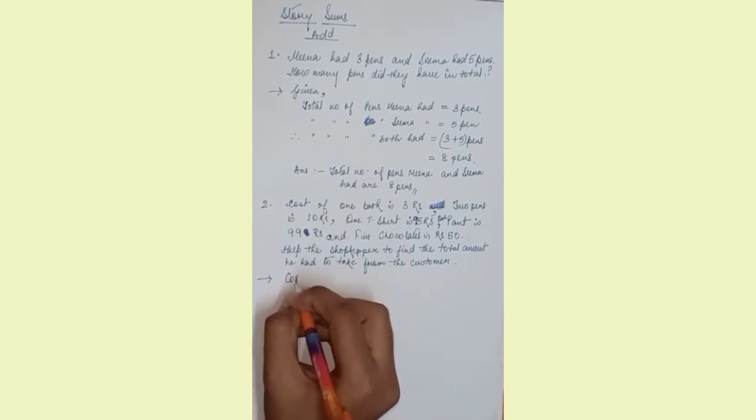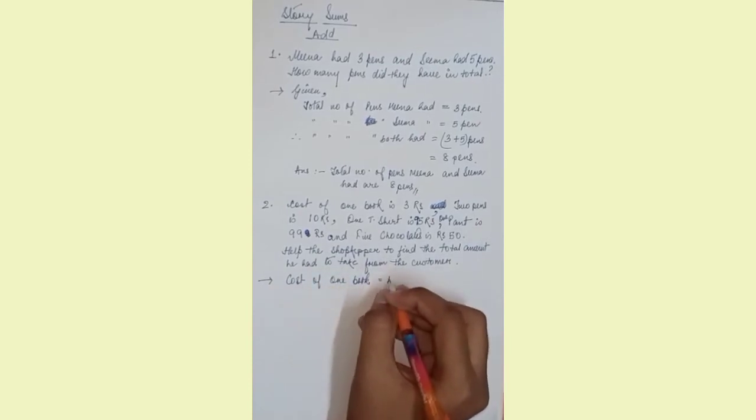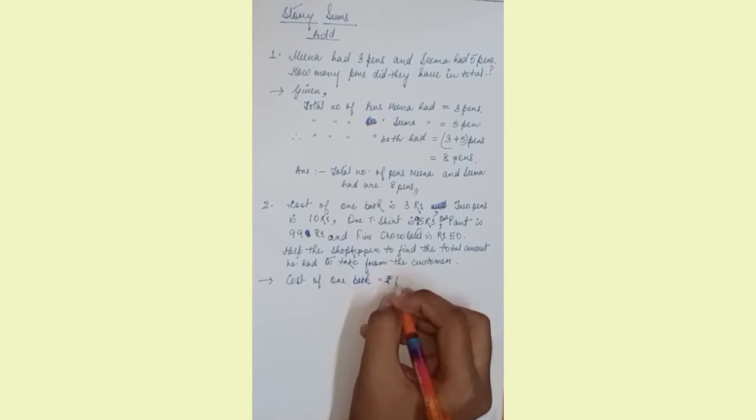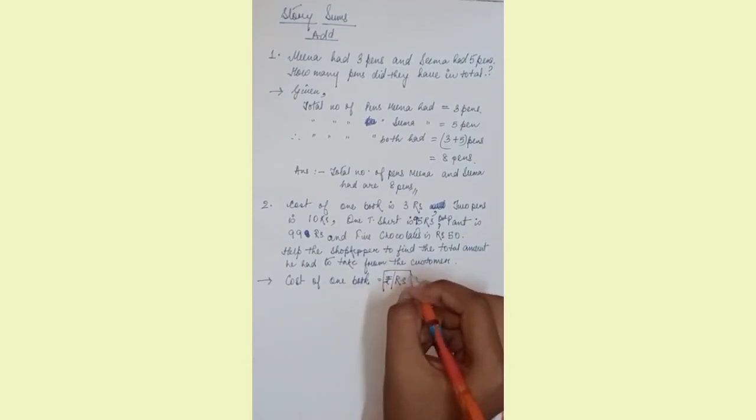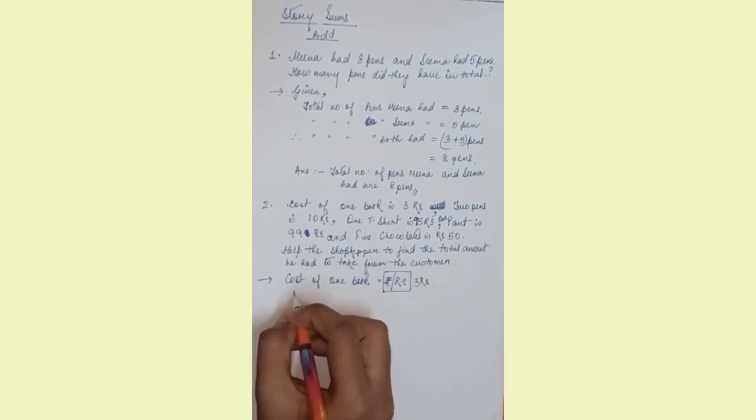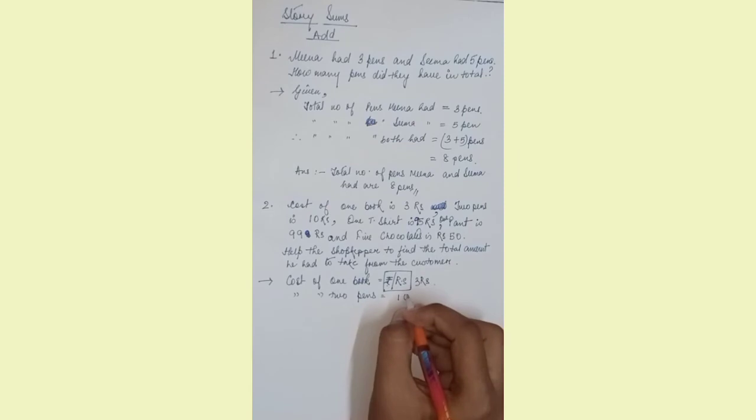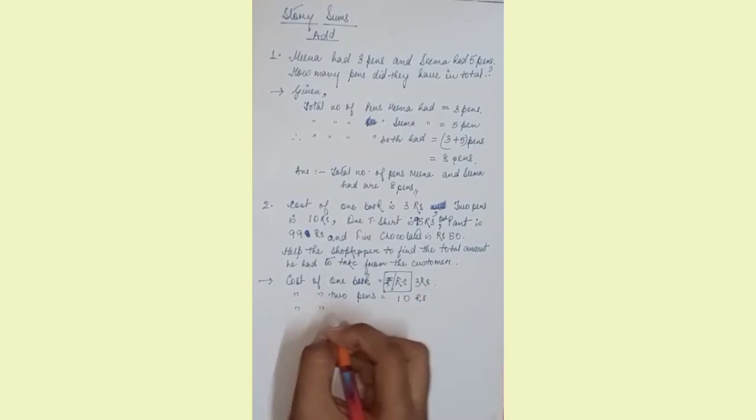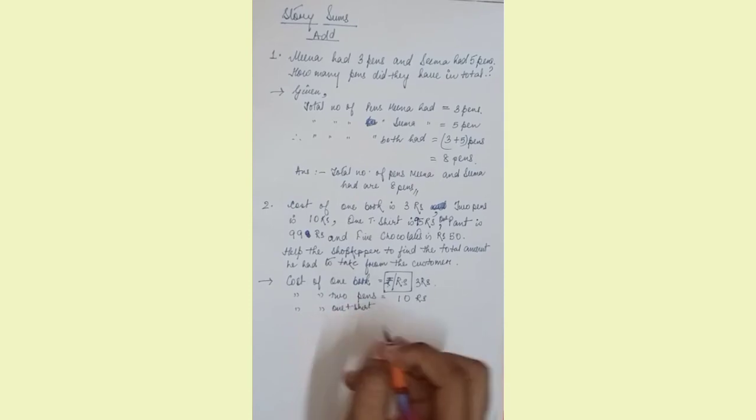How we write here, we'll use the word cost since we are talking about money. So cost of one book is equal to rupees three. You can write it like this or like this, both are acceptable.